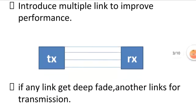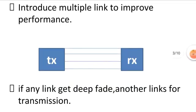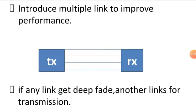How do we improve the performance of the wireless communication system? One simple way is to introduce multiple links between transmitter and receiver. So if any of the links get deep faded, we have another few links for transmission.